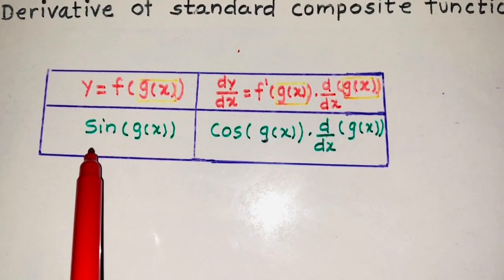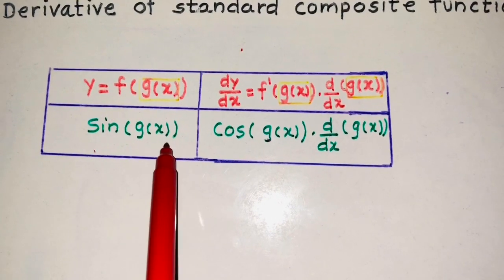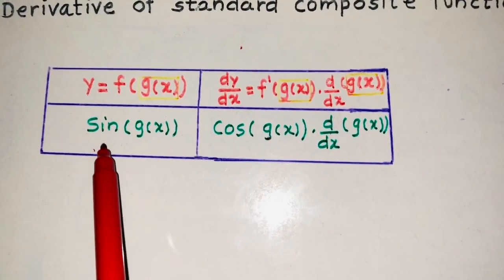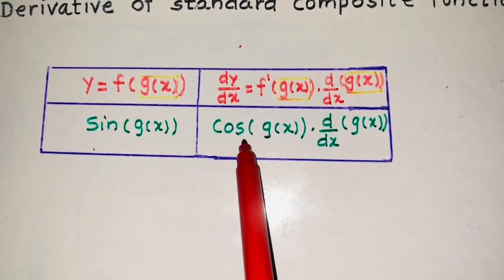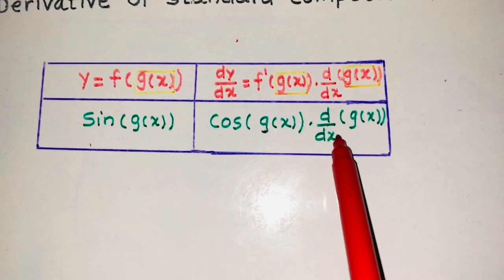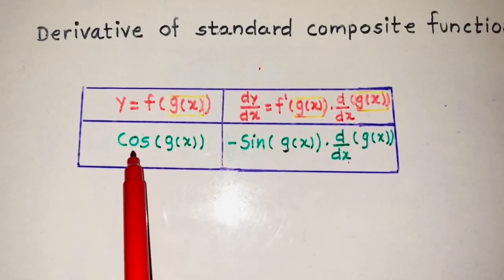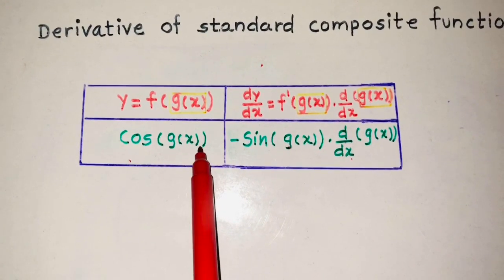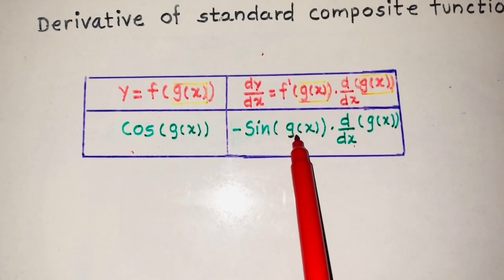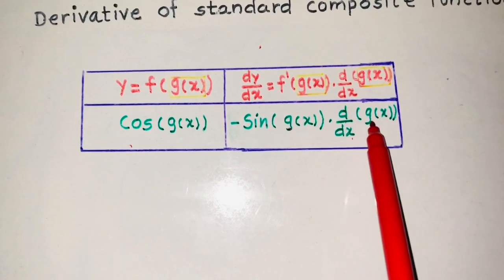First function: sin of g of x. The derivative of sin is cos, so its derivative is cos of g of x into the derivative of g of x. Second function: cos of g of x. The derivative of cos is minus sin, so its derivative is minus sin of g of x into the derivative of g of x.